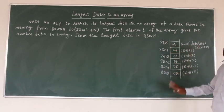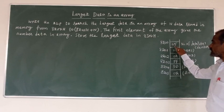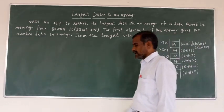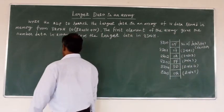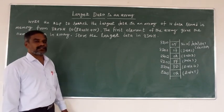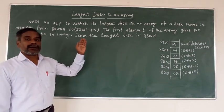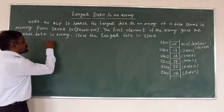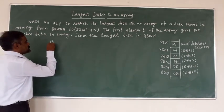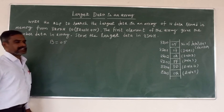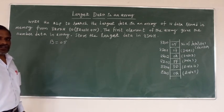First we access the 8200 memory address location to get the number of data. We move that number from memory to another register - suppose the B register. B equals 05. This B register value serves as the counter for the number of data.